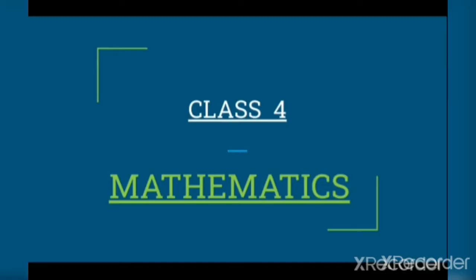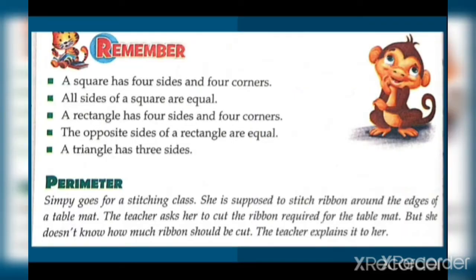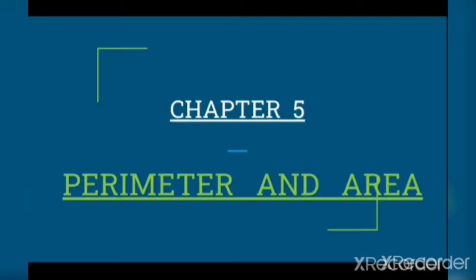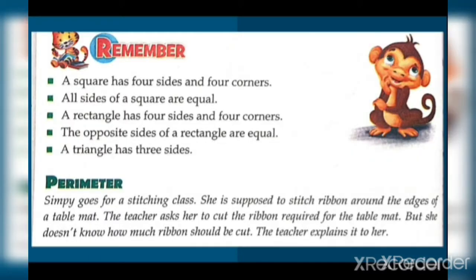Hello students, today we are going to start Mathematics Chapter 5: Perimeter and Area. A square has four sides and four corners. All sides of a square are equal. A rectangle has four sides and four corners.